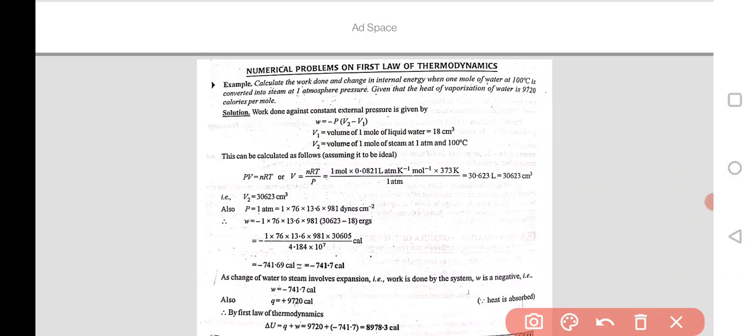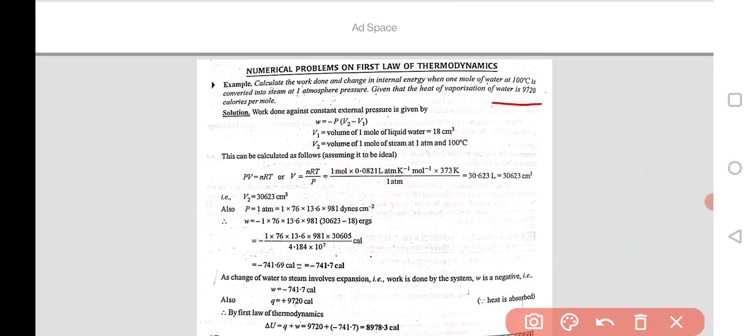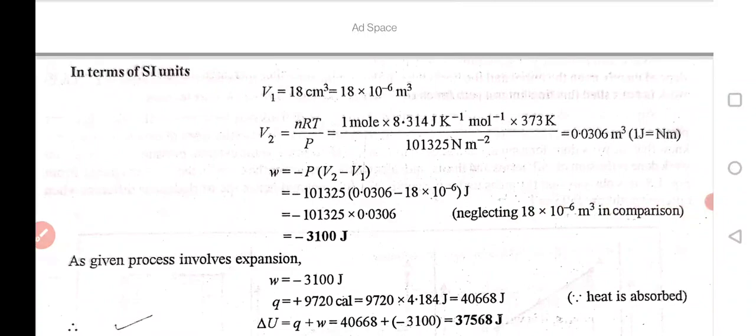When the system does work, it will absorb the heat from the system. So when work is done by the system, heat the value here positive sign and finally delta U the value calculated simply by putting the value of q and w. I hope that this is clear. Next same numerical is just here.